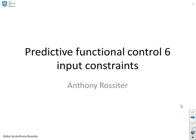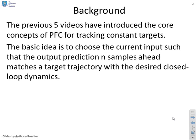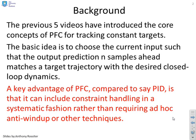This video looks at input constraints with PFC. The previous five videos have introduced the core concepts of PFC for tracking constant targets and including dead time. The basic idea is to choose the current input such that the output prediction n samples ahead matches a target trajectory with the desired closed loop dynamics. A key advantage of PFC, however, compared to something like PID, is that you can include constraint handling in a systematic fashion, rather than requiring ad hoc anti-wind-up or other techniques, and that's what we're going to do next.